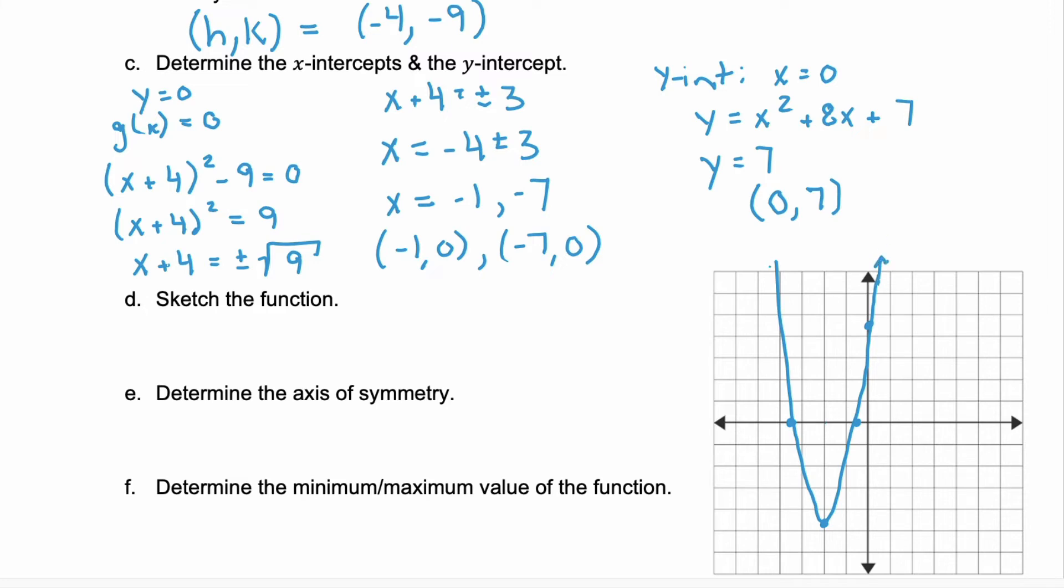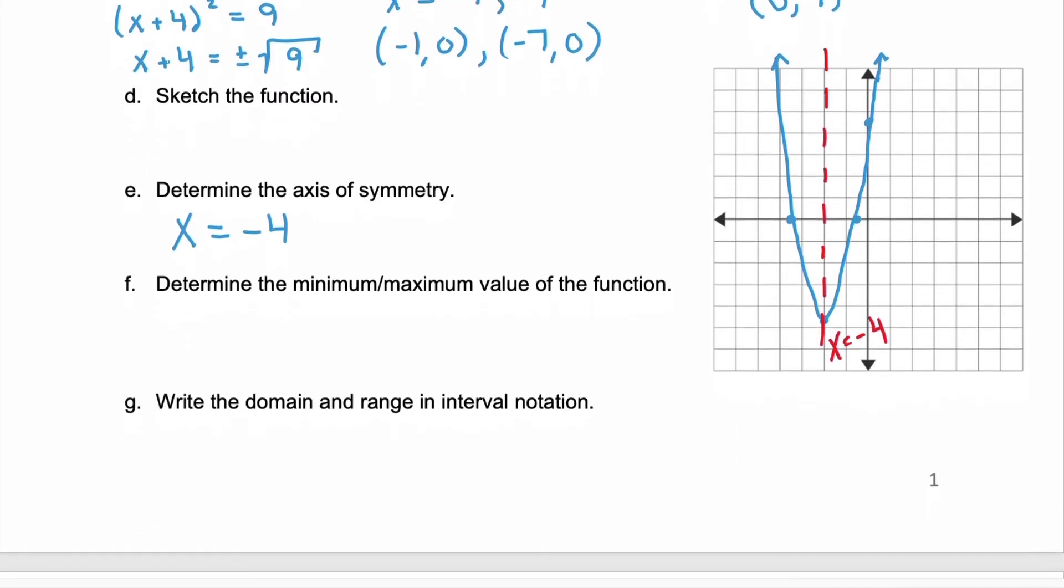Next is part E, to find the axis of symmetry. Remember that is always the vertical line x equals, and it's x equals whatever our h value, or the x value of our vertex is. So here it's x equals negative 4. And we can even put that on our graph. So here would be our axis of symmetry. So this is the line that cuts our quadratic, our parabola, perfectly in half. So the left side and the right side are identical.